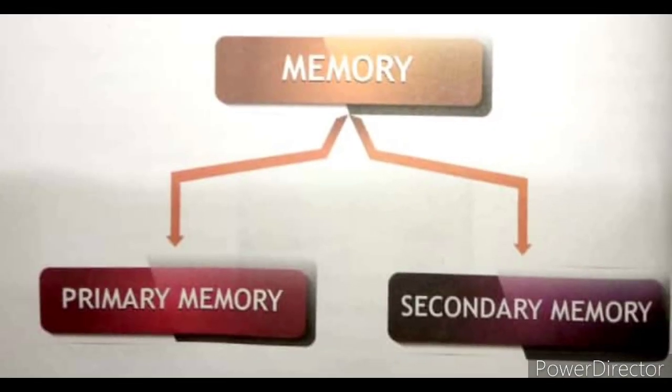Now, children, on the basis of storage, memory can be classified into primary memory and secondary memory. Primary memory is the internal storage area within the CPU that stores data, instructions, and the processed information. It is also known as main memory. It helps in fast access of data and instructions.